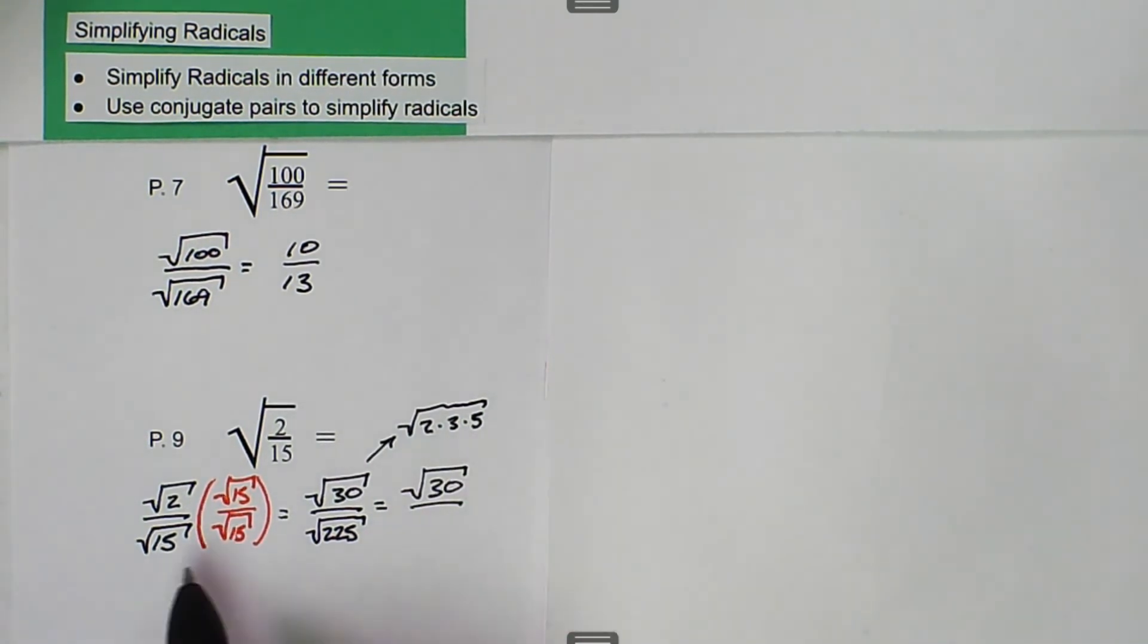But in the denominator, we could have left this as the square root of 15 times 15. Then we know there's a 2 as the index of the radical, and we have two 15s together.